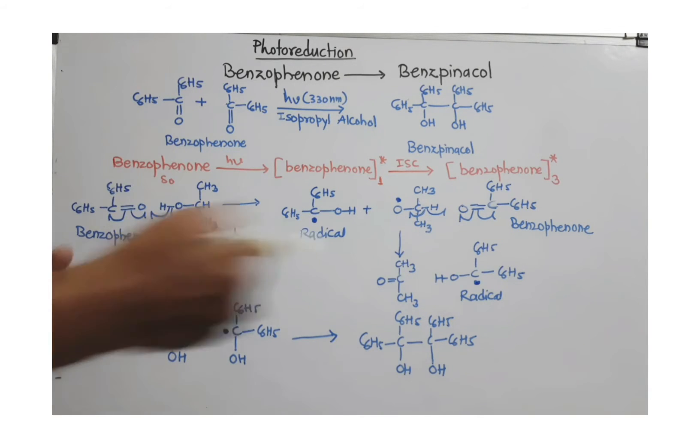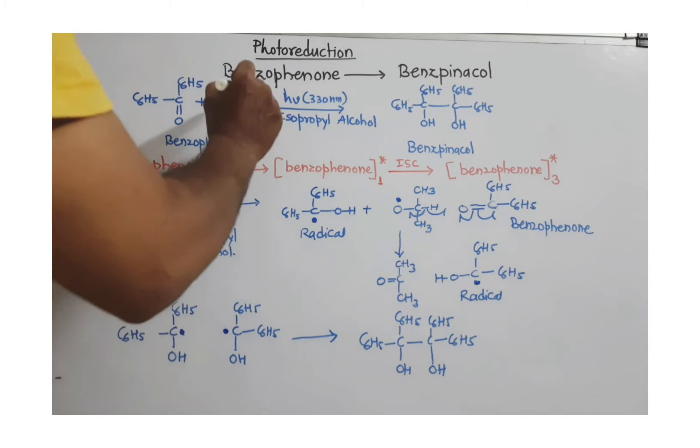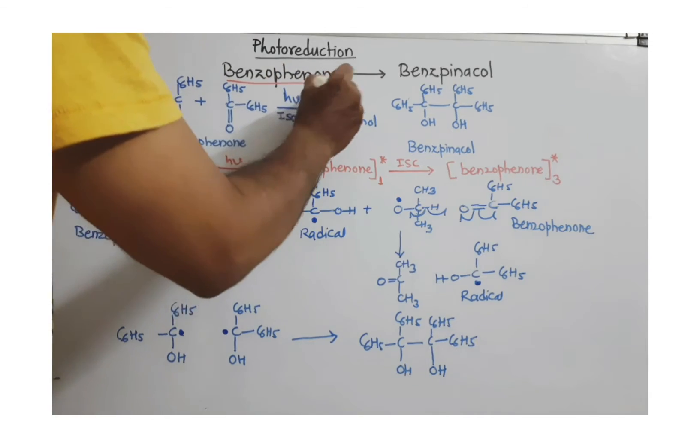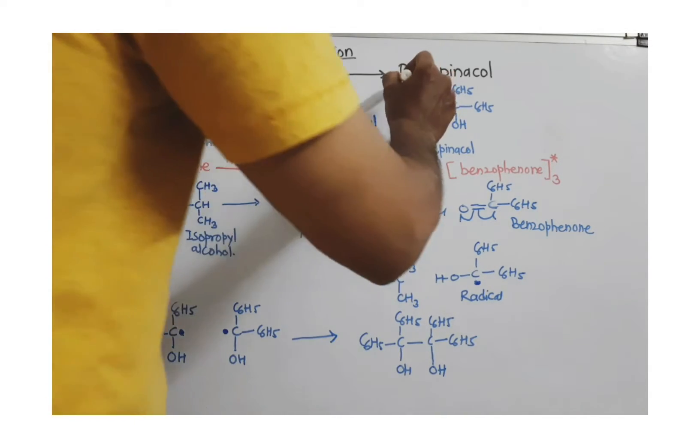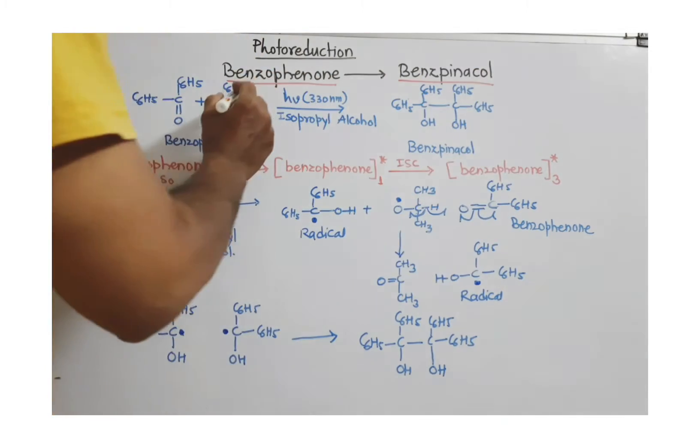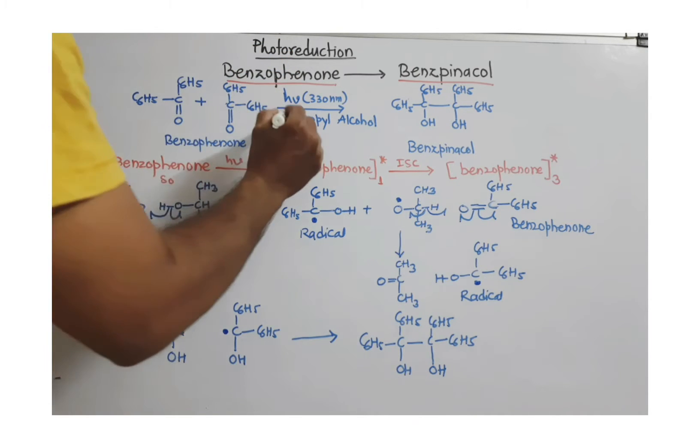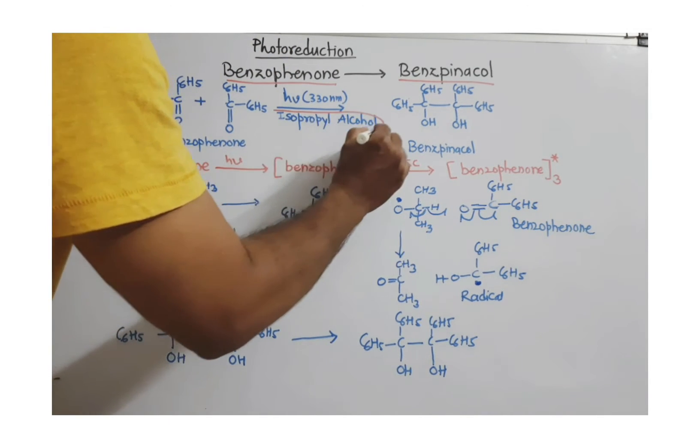Photoreduction. In this reaction, benzophenone, this ketone, is converted to benzophenone, or the reduction of benzophenone taking place in presence of isopropyl alcohol.